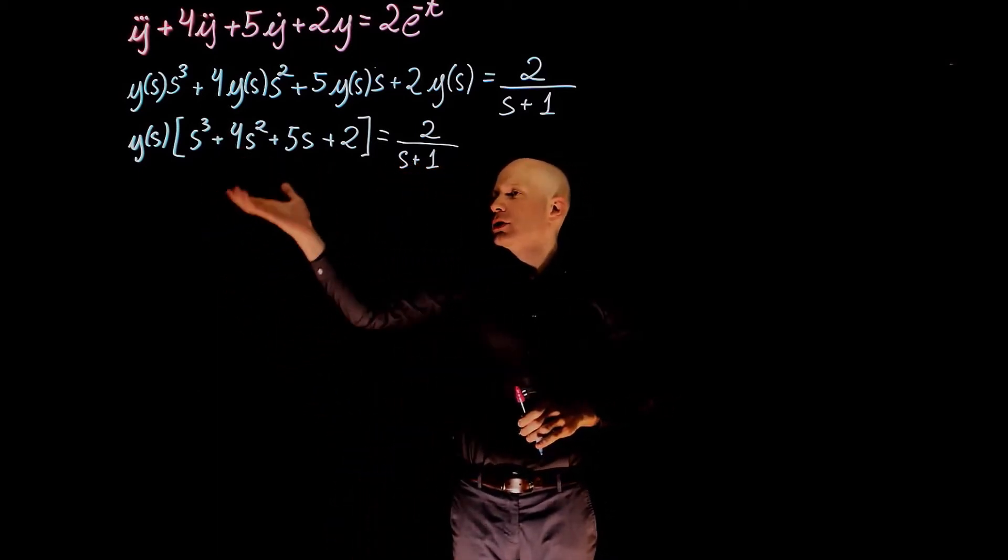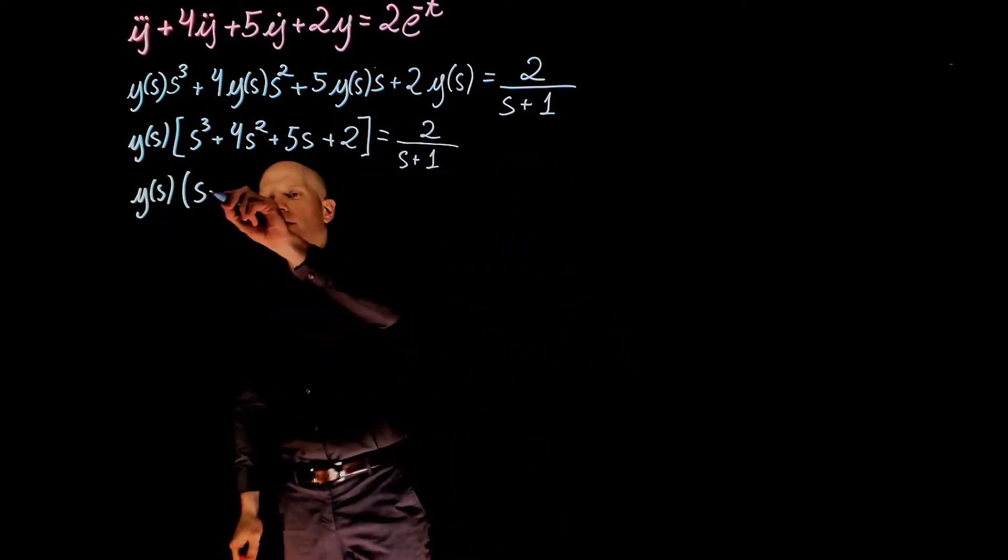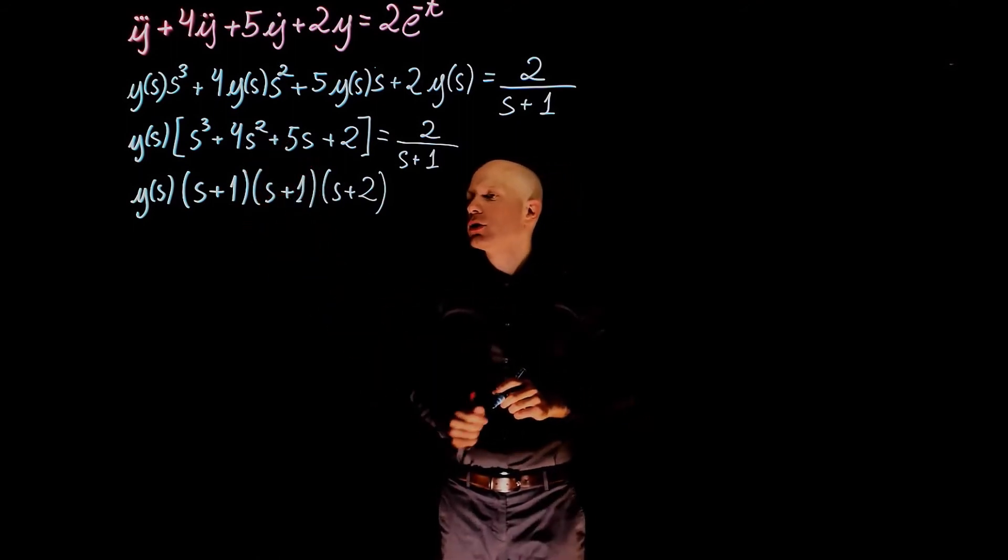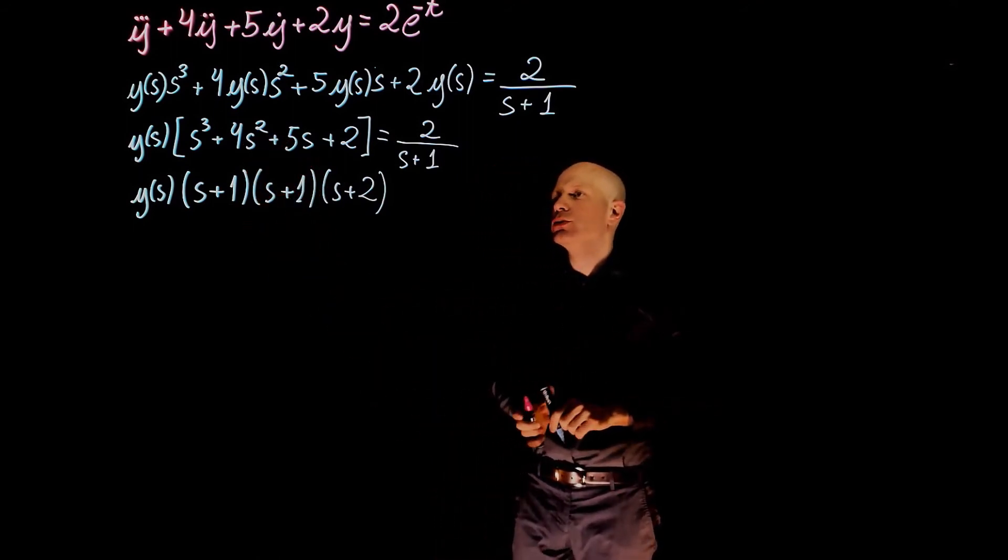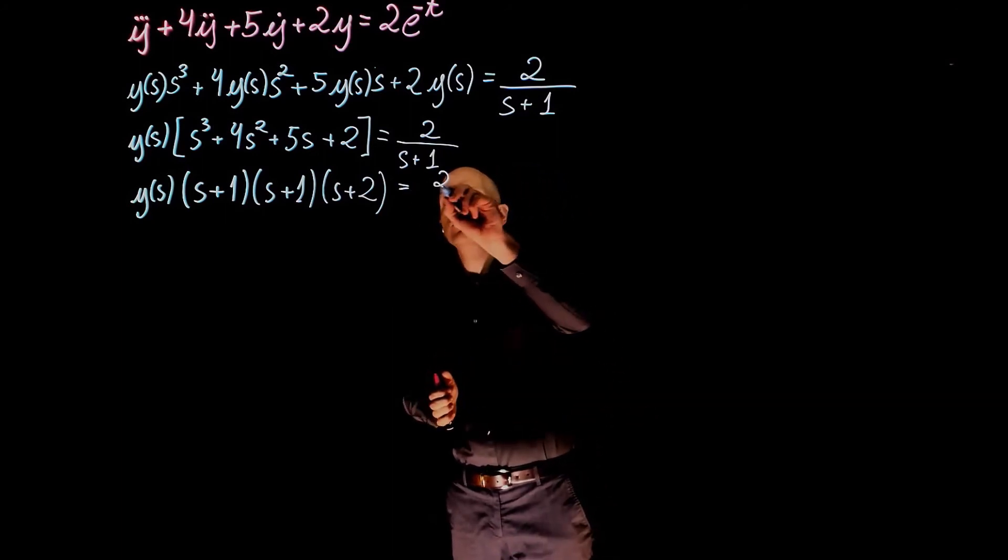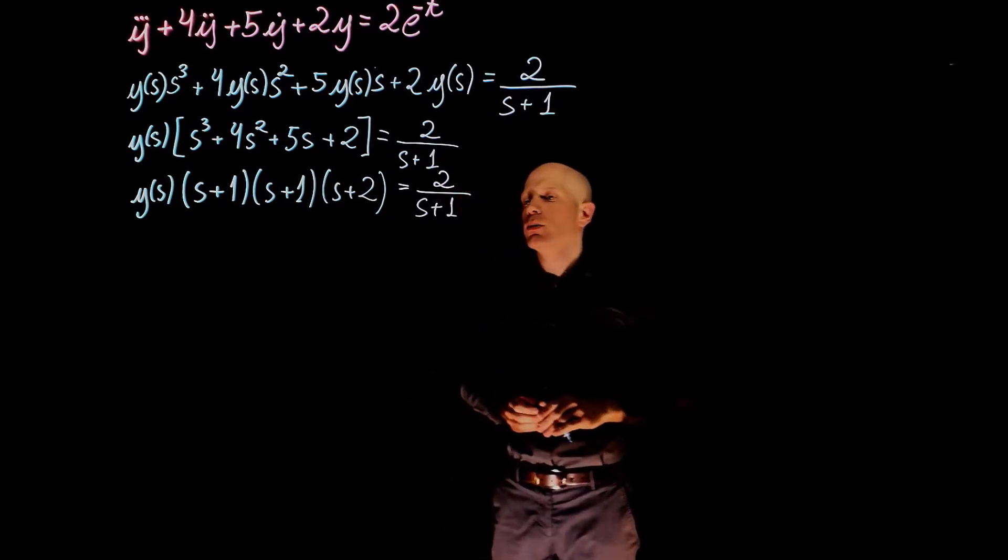This polynomial is a third-order polynomial, thus it has three roots. So we can now rewrite this polynomial as a function of its roots, as shown. And this again equals to 2 divided by s plus 1.